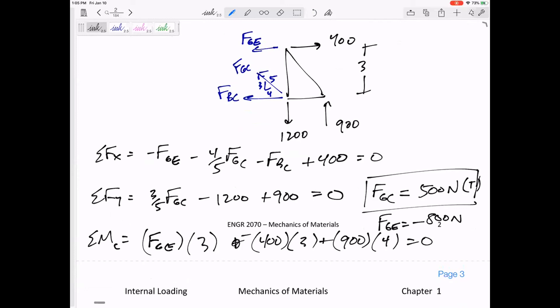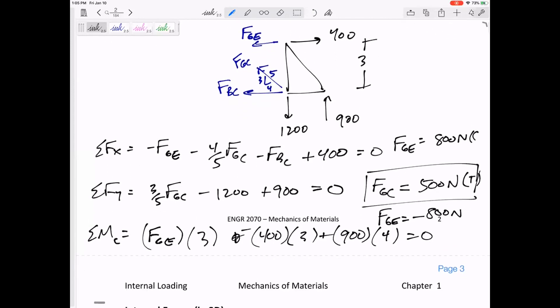So that FGE, let me rewrite it up here, FGE is 800 newtons compression. Because I drew it in tension, it came out negative, it was in compression. And then I would plug these back in—plug that in back there, plug this in back there—to find FBC positive 800. That positive means I chose correctly. I drew it correctly and I drew it in tension. That's my answer right there.